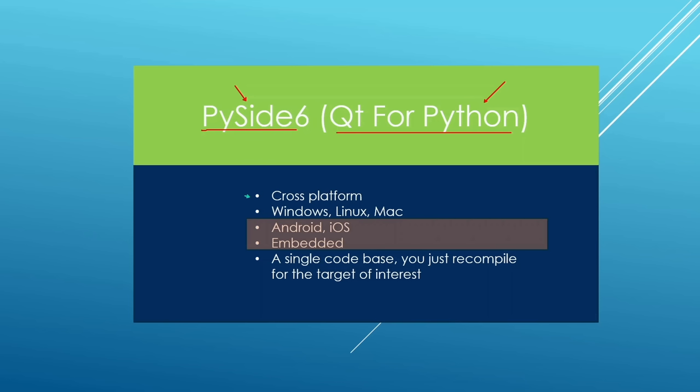Going through Python, you can write cross-platform applications that run on Windows, Linux, and Mac. Currently, support for mobile and embedded is in development — I wouldn't use this in production, but there should be good progress in this area in the future.